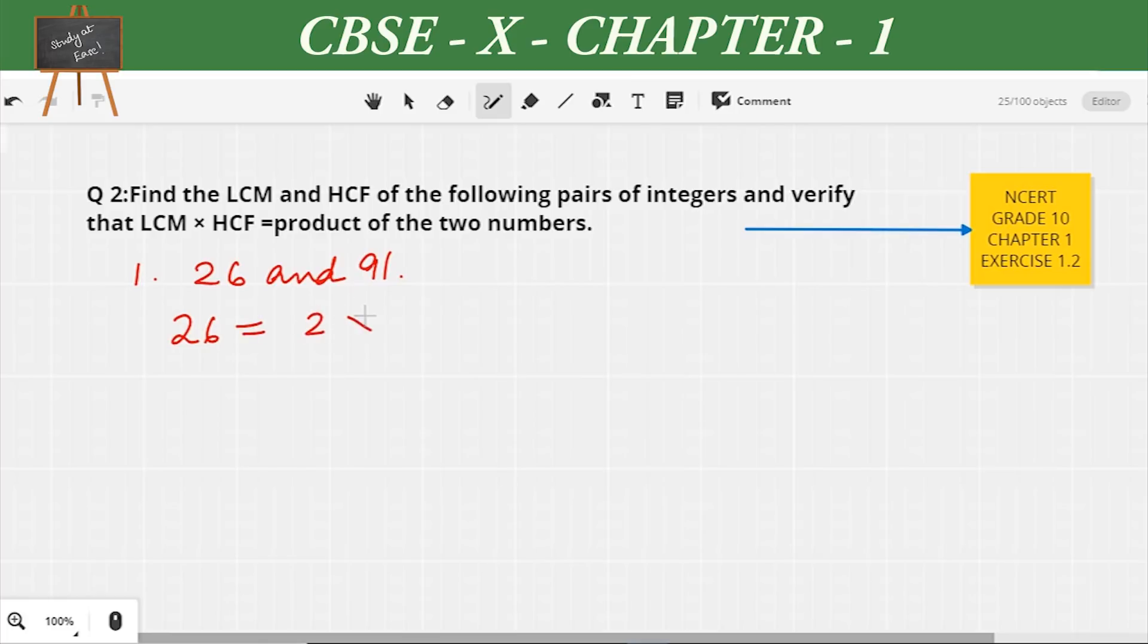The first question: 26 and 91. Let's write the factors of 26 which is 2 × 13, and 91 is equal to 7 × 13. In these two numbers, in the factorization you will find 13 is common, so the highest common factor or HCF of 26 and 91 is 13.